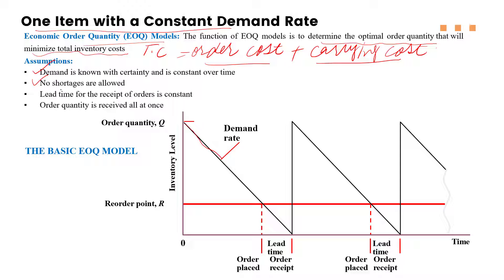The second assumption is that no shortages are allowed — we have enough inventory to meet demand and there should be no shortages of that particular product. The third assumption is that the lead time is constant. The lead time of inventory replenishment is constant and known — whether we receive after three weeks or three days, it must be constant.